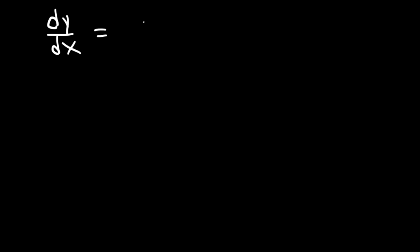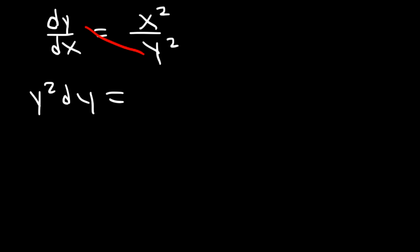dy/dx is equal to x squared divided by y squared. In this problem, what we need to do is separate the variables — on one side we only want y variables, and on the other side we only want x variables. Since we have a fraction separated by an equal sign, let's cross multiply. dy times y squared is simply y squared dy, and on the other side it's going to be x squared dx.